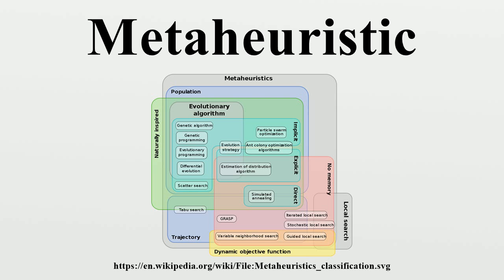Another classification dimension is single solution versus population-based searches. Single solution approaches focus on modifying and improving a single candidate solution. Single solution meta-heuristics include simulated annealing, iterated local search, variable neighborhood search, and guided local search. Population-based approaches maintain and improve multiple candidate solutions, often using population characteristics to guide the search. Population-based meta-heuristics include evolutionary computation, genetic algorithms, and particle swarm optimization. Another category of meta-heuristics is swarm intelligence, which is a collective behavior of decentralized, self-organized agents in a population or swarm.